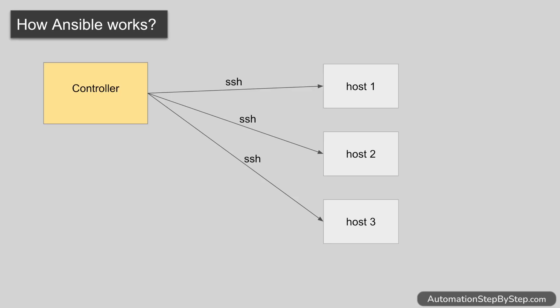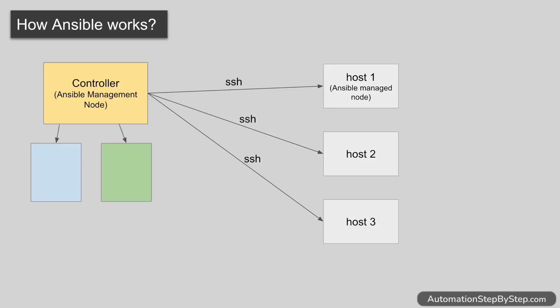A single controller can control multiple host machines — we can do configurations, setup, software install, uninstall, and updates on all these host machines from a single controller. There should be SSH connectivity between the controller and host machines. The controller is also called the Ansible management node and the host machines are called Ansible managed nodes — just some terminologies you should be familiar with.